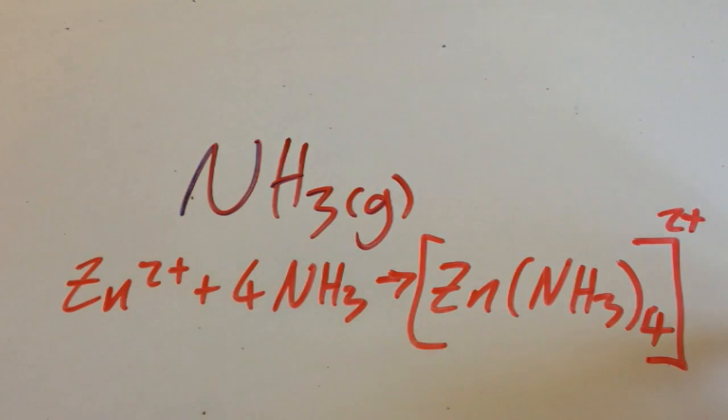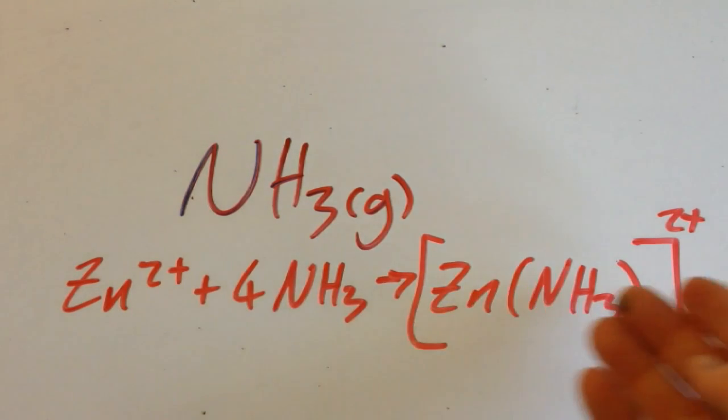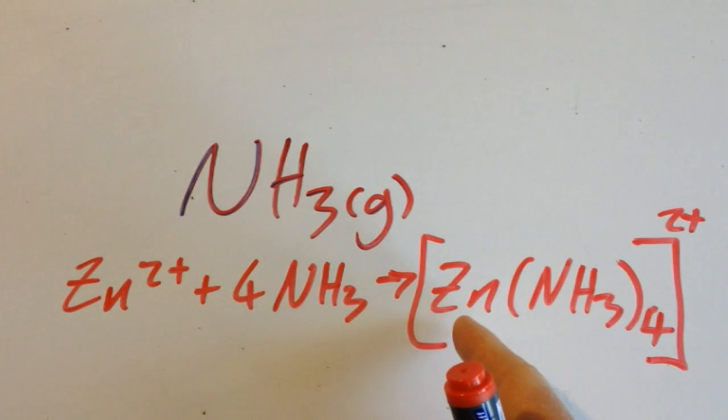Now hopefully you remember this is a complex: central transition metal ion, these are ligands, and their lone pairs are datively covalently bonded to the zinc. And what color would this be? Well, zinc has a full d-orbital so it's going to be colorless, and this must be a solid—very high molecular mass.